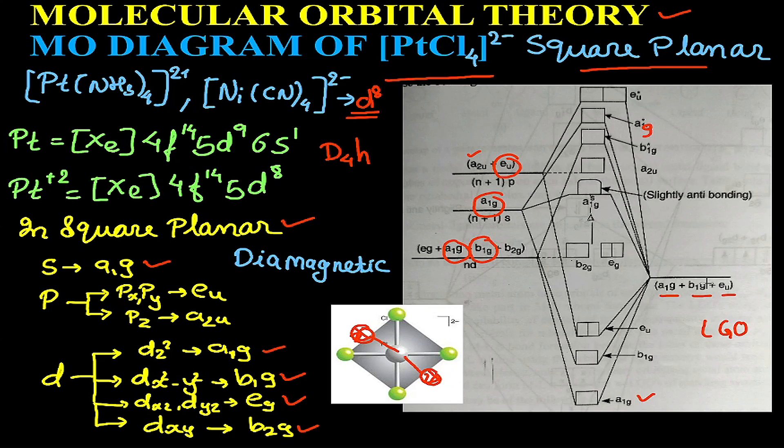b1g will combine with b1g and we will get bonding b1g and antibonding b1g. eu of the metal and eu of ligand will combine to give eu bonding and eu* that is antibonding.